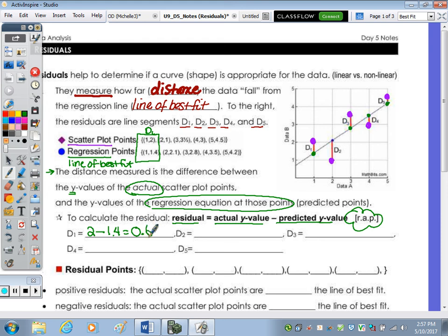Distance or D2 right here, the actual Y value is 1, so 1 minus 2.1 is negative 1.1. D3, just keep going in order. Once you take a minute to calculate D3, D4, D5 using the points, so actual minus predicted.